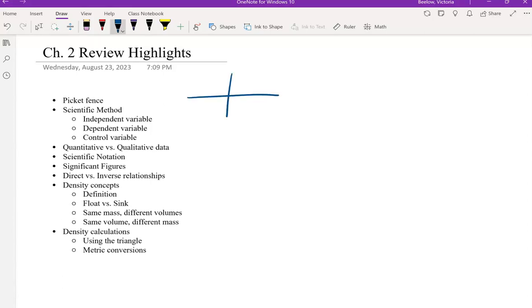So the first thing I want to talk about is picket fences. So there will be two of these on the test. Again, this was in that first review assignment, the very first assignment you did for this chapter. Again, with a picket fence, you always want to make sure that the units here and here are the same so that they cancel.